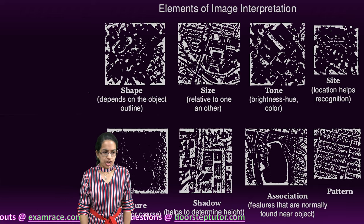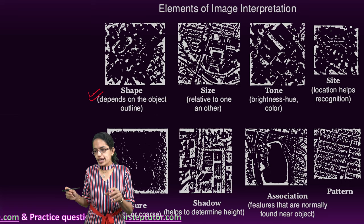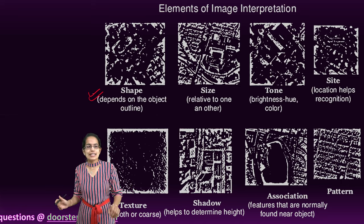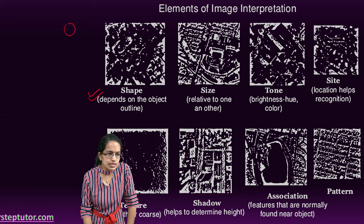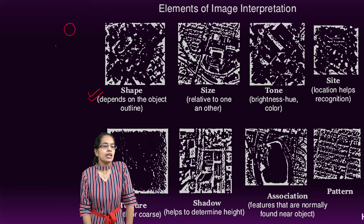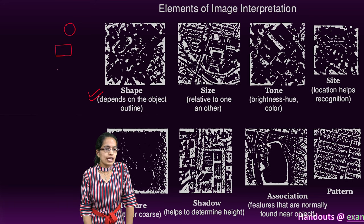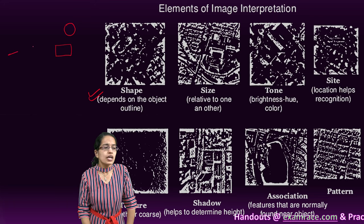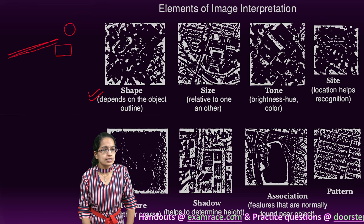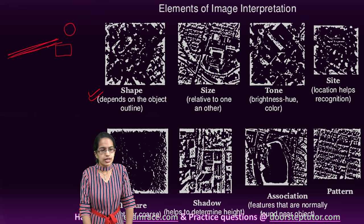First is the shape. It explains the outline. With the outline, I can easily identify. If it is a circle, I can say it's a well. If it is a square, I can say probably it is a house. If it is a long linear path, I can say it's a transport network, either a road or a railway.